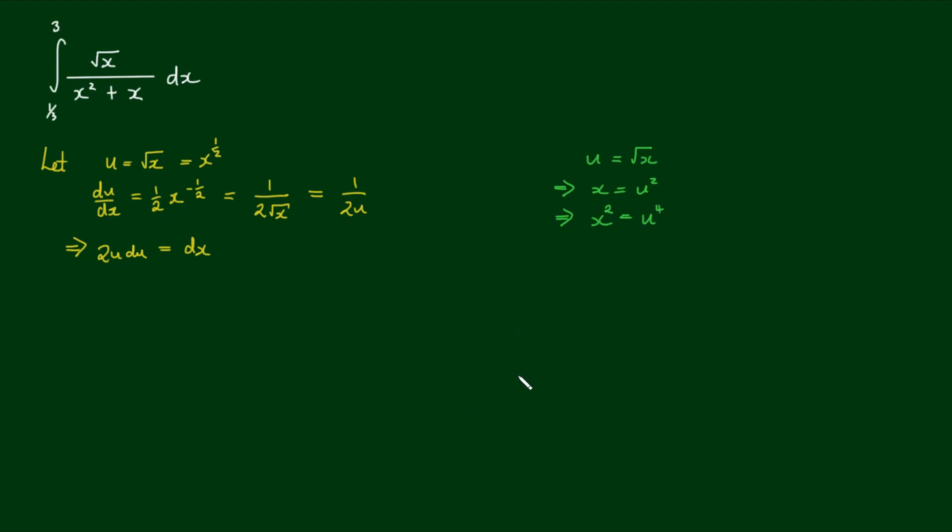Actually, before we do that, we have to recalculate the bounds, or the interval. So we're starting with x equals one third, which means that we're integrating from u is equal to the square root of one third, which equals one on root three. And we're integrating to x equals three, so that means we're integrating to u is equal to the square root of three.